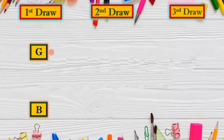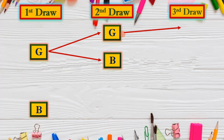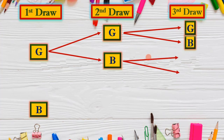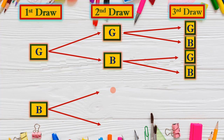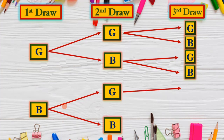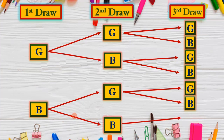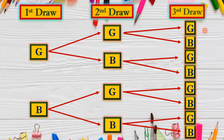We set up a three-column tree diagram. In the first draw there are two possibilities: green or black. Given G in the first draw, the second draw is either G or B. In the third draw, given G and G, we have G or B; given G and B, we have G or B. Given B in the second draw, the third draw could be G or B; and given B and B, the third draw is also G or B. There are eight possible outcomes — two raised to the power of three, since there are three draws each with two possible outcomes.